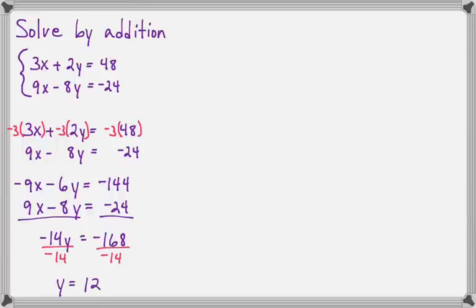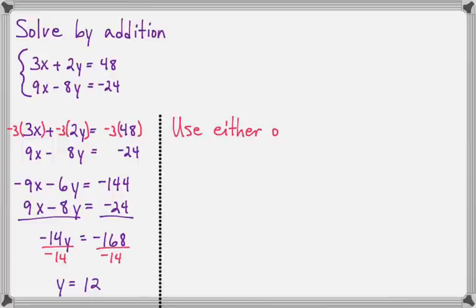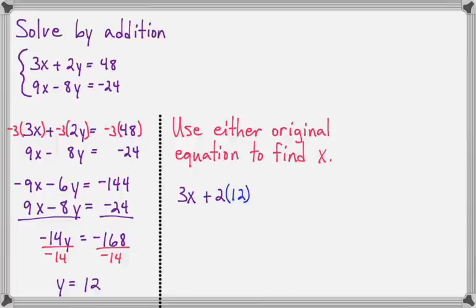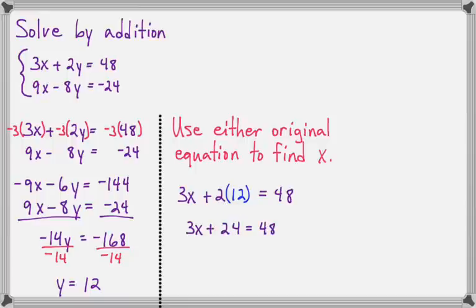Now all I need to do is find the x that goes with that y. I'll plug 12 back into either one of my original equations — whichever looks easiest. I choose the top one: 3x plus 2 times 12 equals 48. 2 times 12 is 24. Subtract 24 from both sides, then divide both sides by 3, and x equals 8.